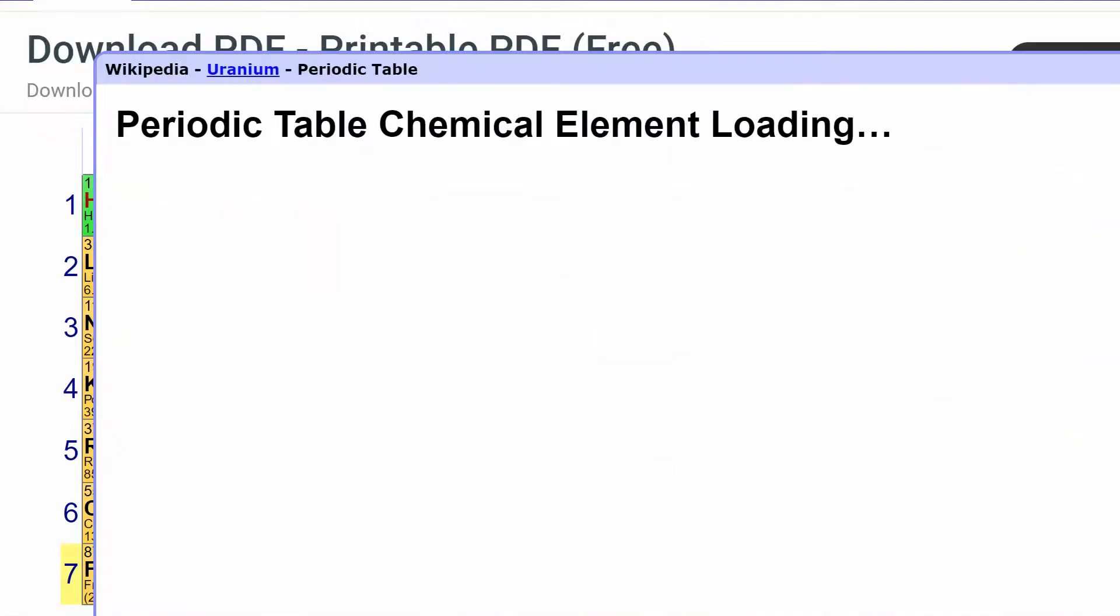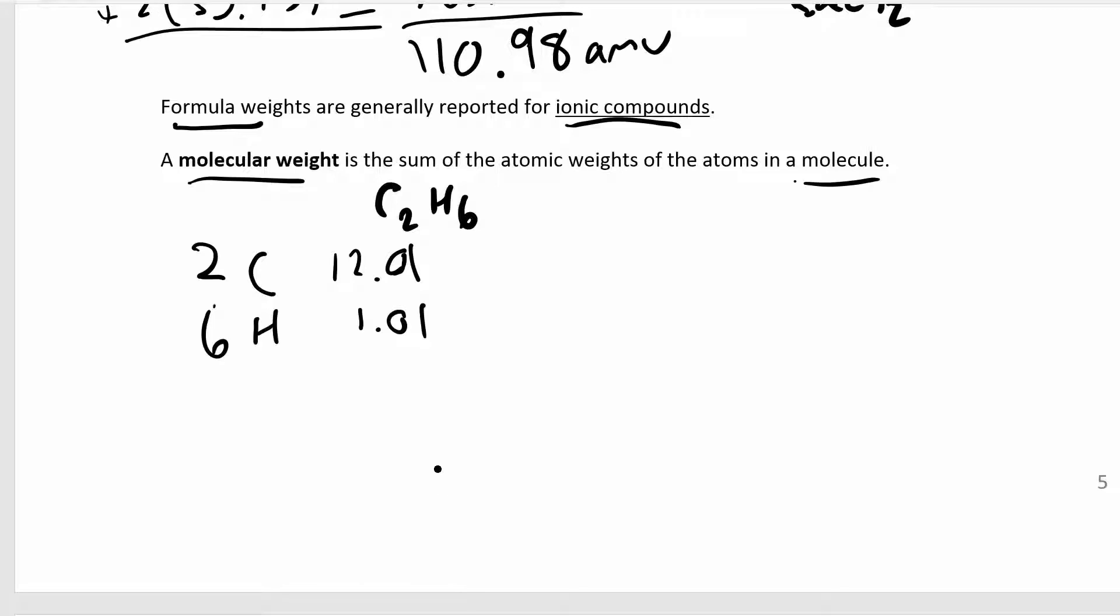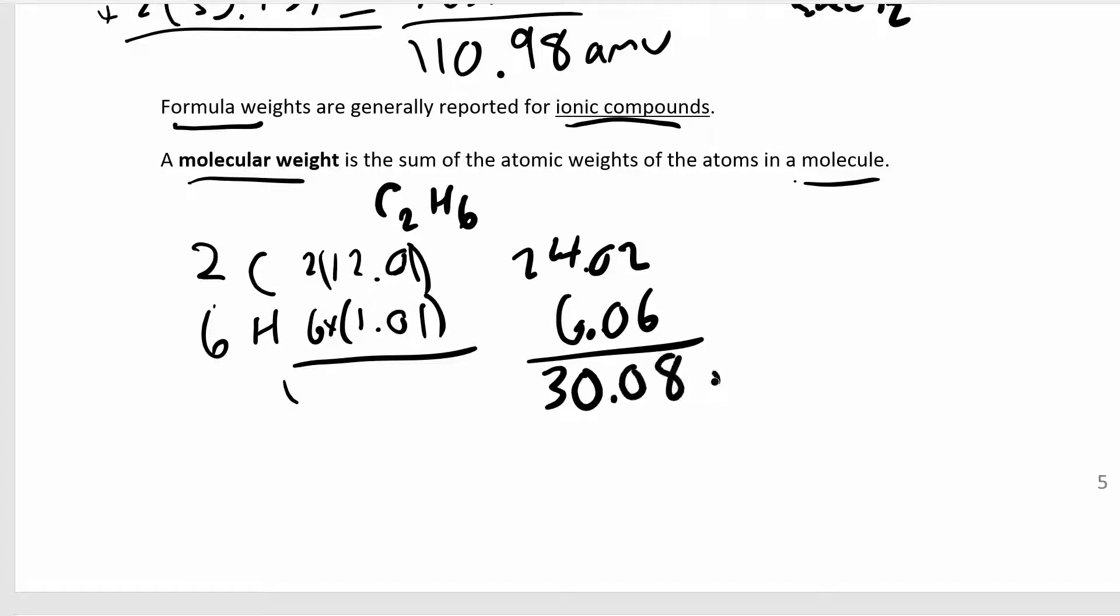Multiply this one by six. So we have 6 times 1.01, and 2 times 12.01. This is 6.06, and this is 24.02. When you add that, you get 30.08 atomic mass units. That's your final answer.